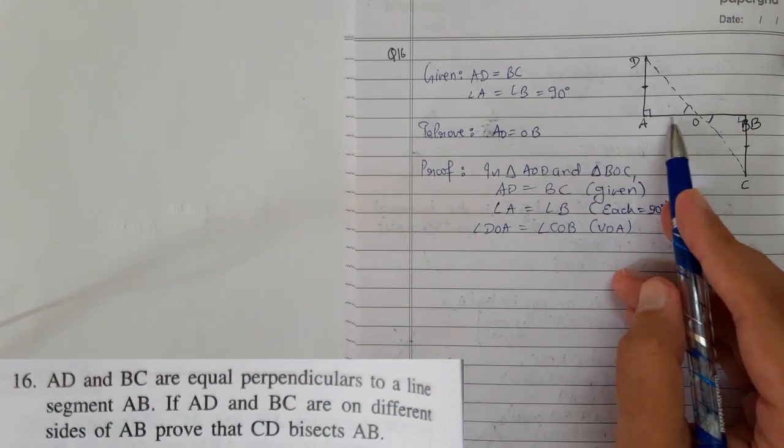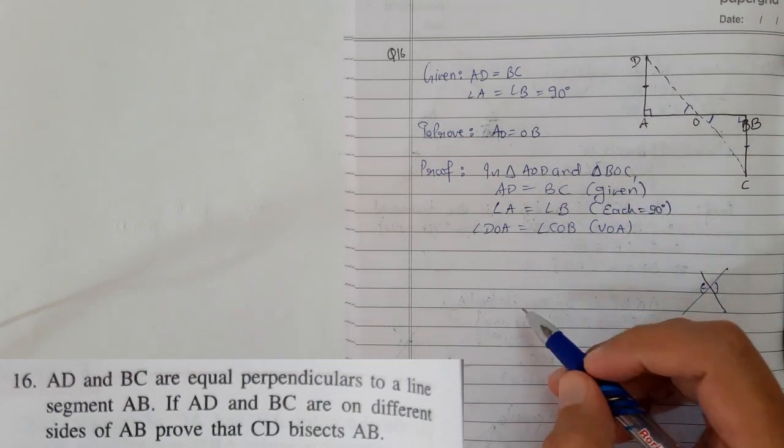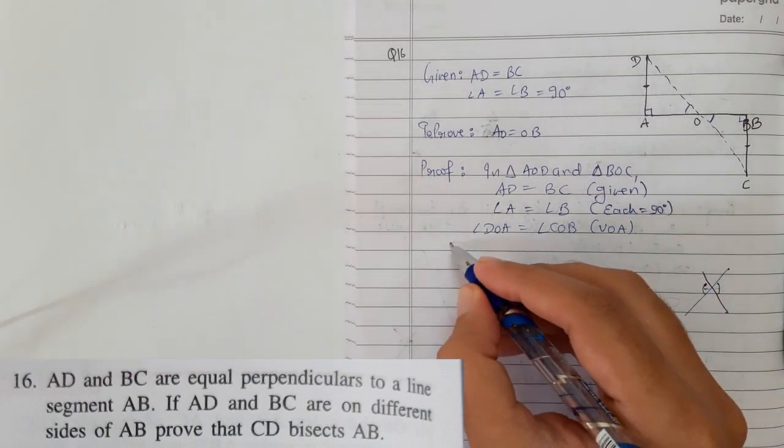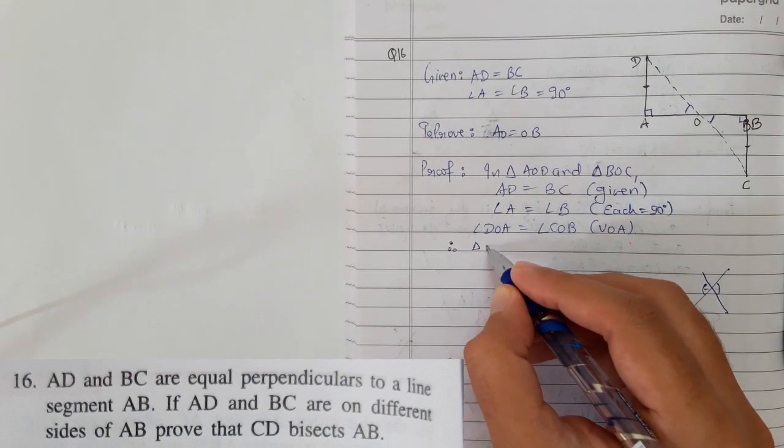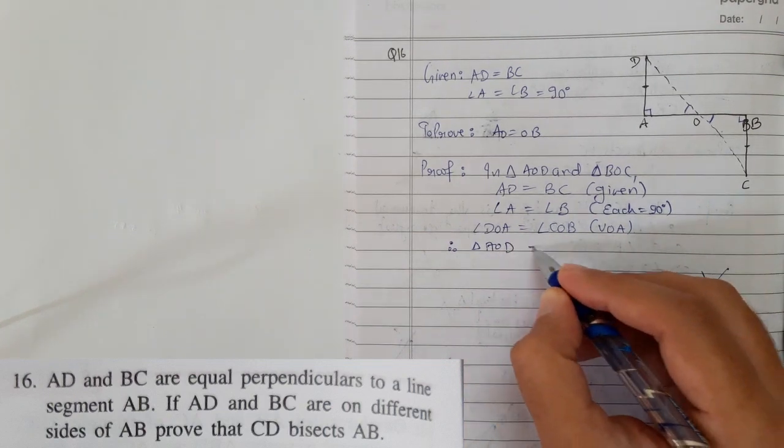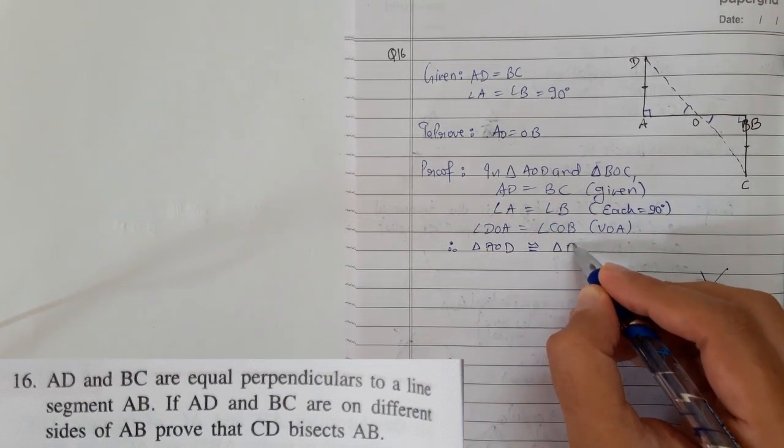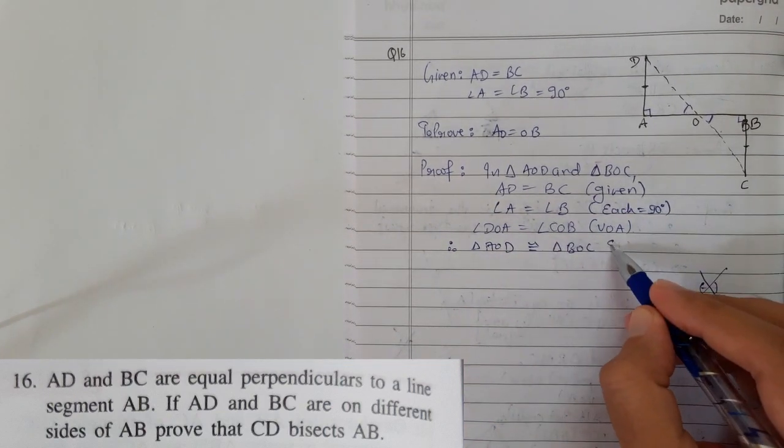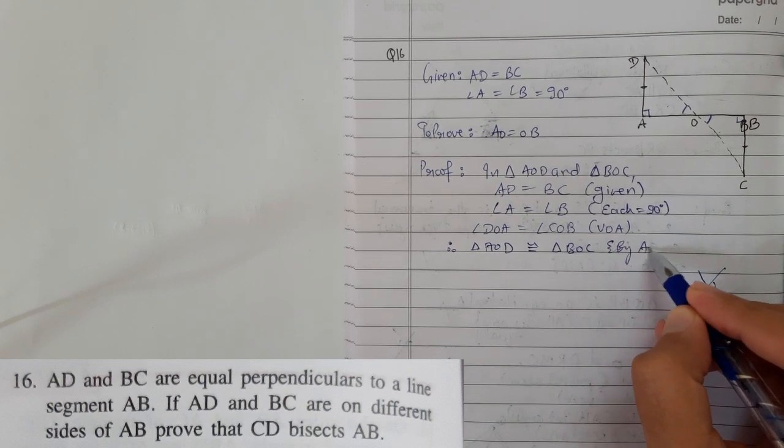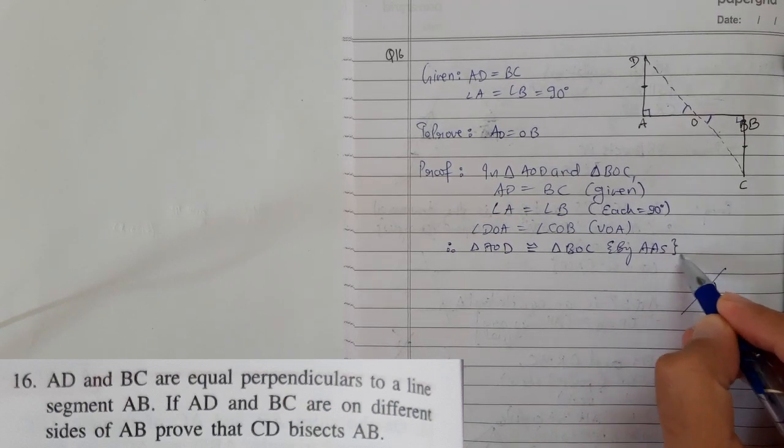Now we got the three things. We got angle, angle, side. Therefore, triangle AOD is congruent to triangle BOC by angle angle side.